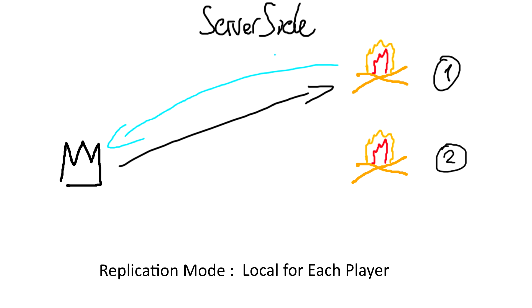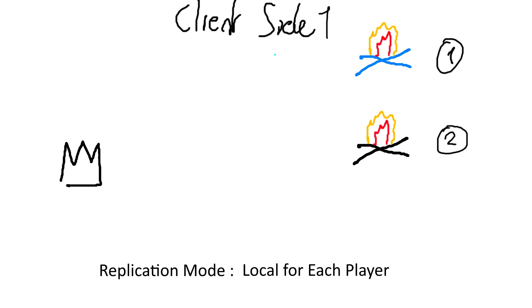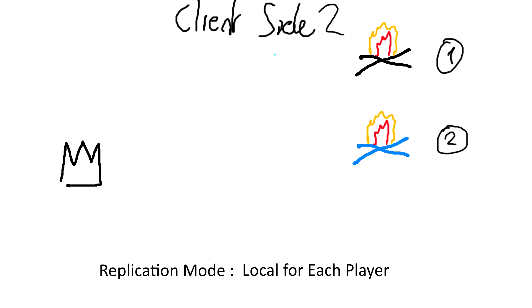The last replication mode is 'local for each player'. As the owner, if we modify the value we receive the callback. If we are client side one or client side two and the owner modified the value, we don't receive any callback. If we are the controller and modify a local-for-each-player value, we receive the callback but the server and other clients don't. If we are not the controller and modify it, we receive the callback but the owner and other clients do not.